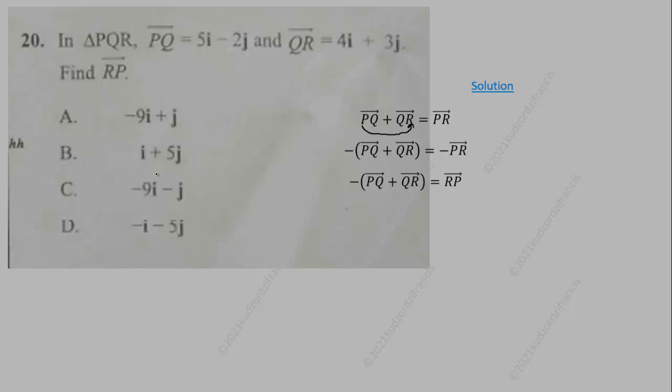Now we just have to substitute the components given to us here into the vectors, and that will simplify: 5i plus 4i will give us 9i, negative 2 plus 3 will give you positive j. So this will give us negative 9i minus j as the answer for RP.